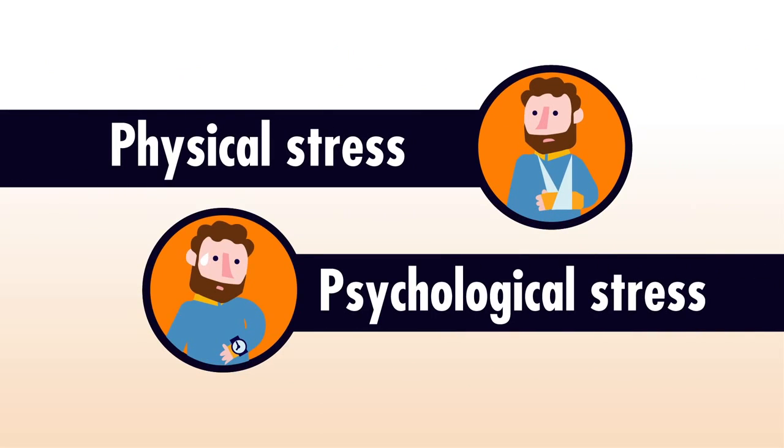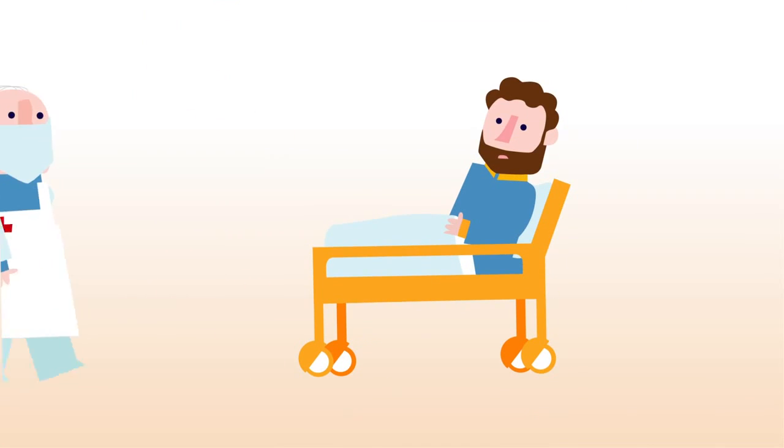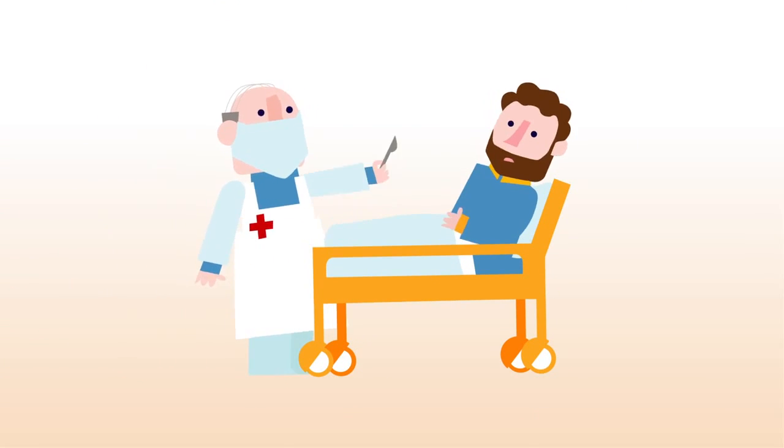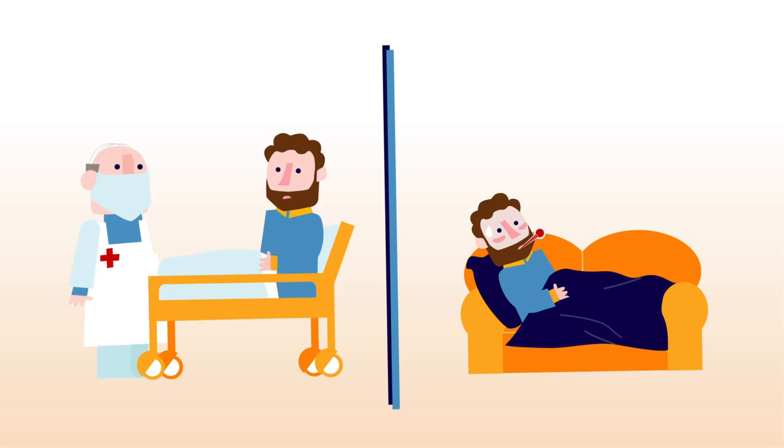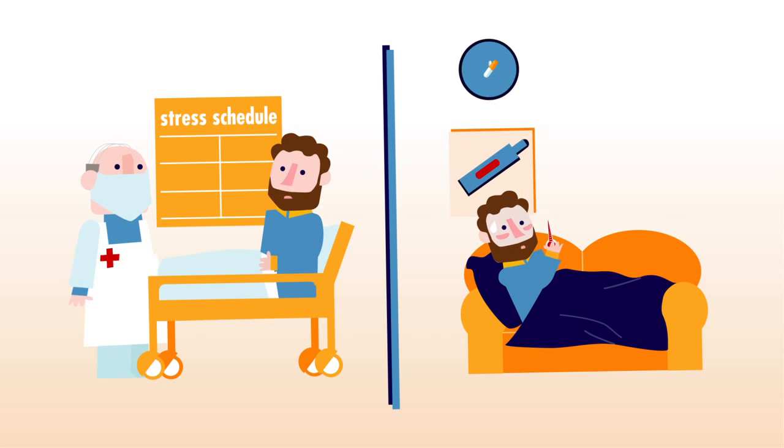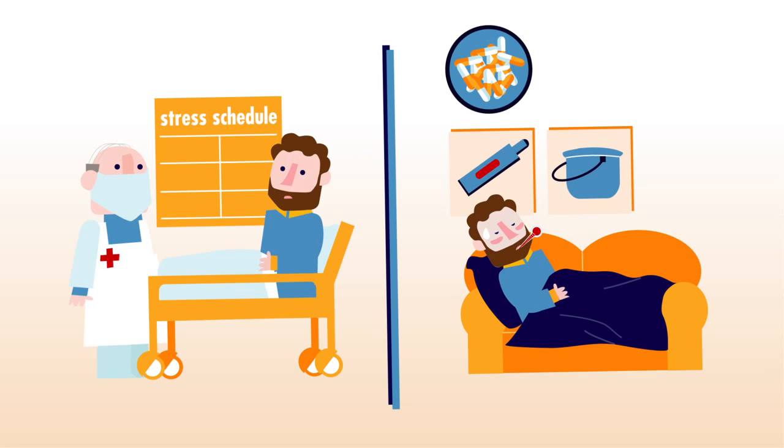There are two kinds of stress situations. First, the physical form. This can occur when you undergo surgery or you're ill. To prevent an Addison Crisis, you should always discuss your stress schedule with your doctor before any operation. If you have a fever, you should take more pills. And if you're vomiting or have severe diarrhea, call your doctor right away.